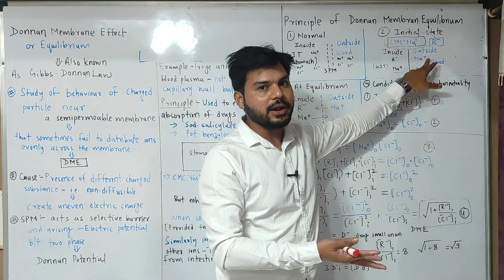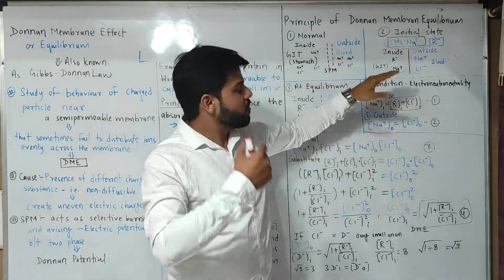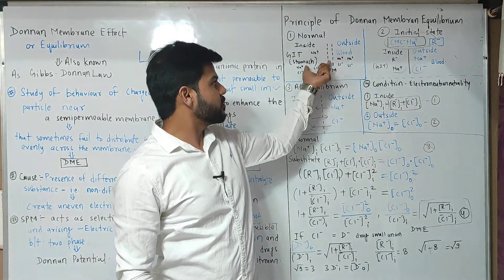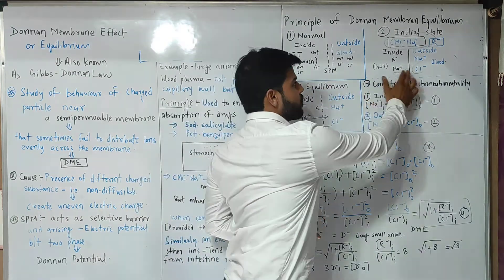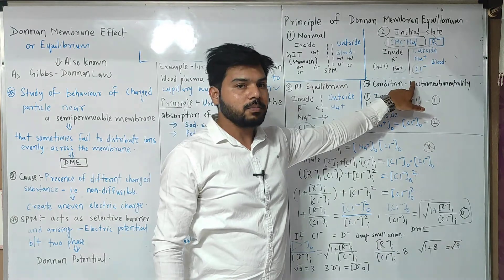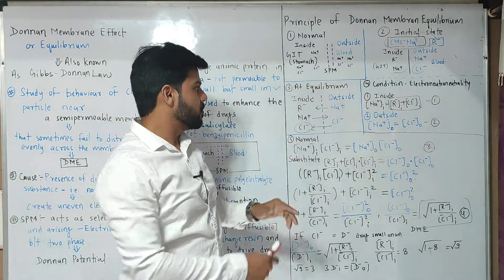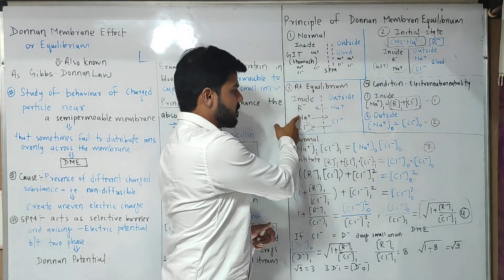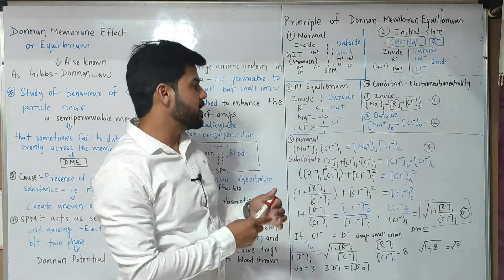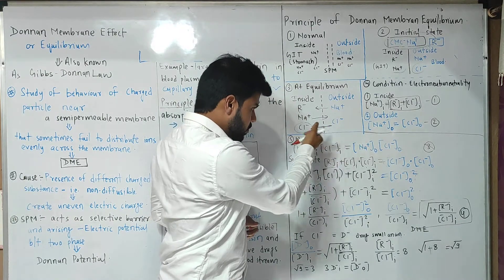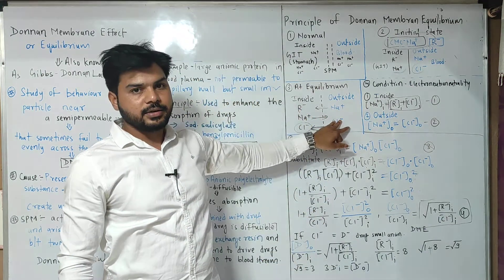Outside, in the blood side, sodium and chloride ions are already present in our circulation. In normal condition there is no R⁻ present, but in the experimental condition there is a non-diffusible ion present. So in this process, movement of ions will take place, but R⁻ will not diffuse to the outside. At equilibrium, inside there will be R⁻, Na⁺, and Cl⁻; and outside there will be Na⁺ and Cl⁻. So the chloride ion will move from outside to inside, and sodium ion will move from inside to outside.